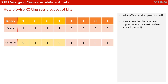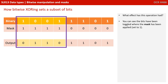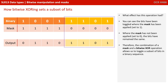So what effect has this had on the output? The bits have been toggled where the mask has been set to 1 — they've been switched around: the 1s become 0s and the 0s become 1s. Where the mask has been set to 0, the bits have remained the same as the original sequence. Therefore, the combination of a mask and a bitwise XOR operation allows us to toggle a subset of bits in a binary sequence.